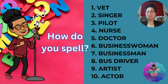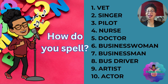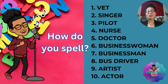How do you spell number six, businesswoman? B-U-S-I-N-E-S-S-W-O-M-A-N. Number seven, how do you spell businessman? How do you spell number eight, bus driver? B-U-S-D-R-I-V-E-R. How do you spell number nine, artist? A-R-T-I-S-T. How do you spell number ten, actor? A-C-T-O-R.